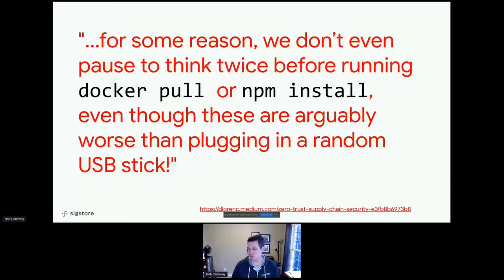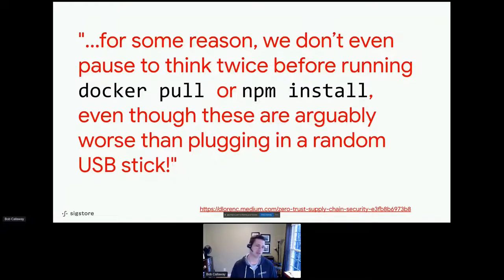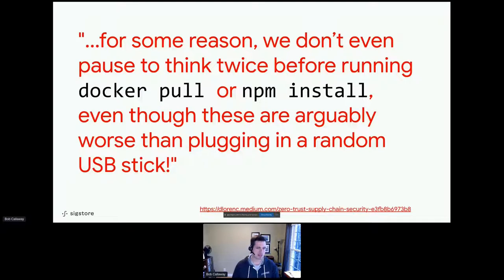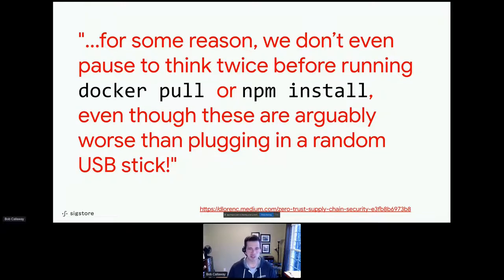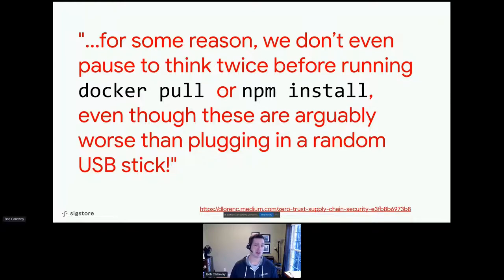In corporate security training, you've probably seen that screen about the USB drive on the ground — everyone knows you don't pick it up and plug it into your system. But when you pull an image off Docker Hub or Quay, or do an NPM install to pull down a binary, or copy and paste something off Stack Overflow, you're essentially doing that exact same process: going out to an untrusted source, pulling in random content, putting it on your system, and normally running it right away.